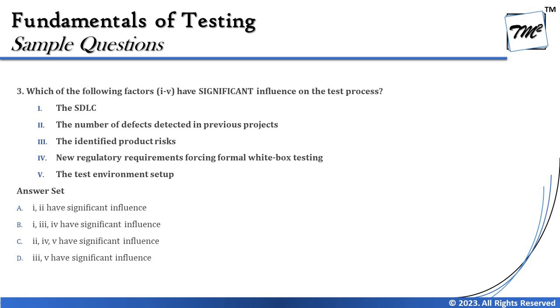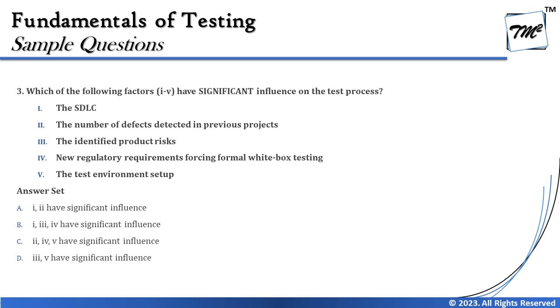Number Four — new regulatory requirements forcing formal white-box testing. This is another important factor; regulatory and contractual requirements, if not fulfilled, may prevent the product from going live, which is a big challenge for the organization. Number Five — the test environment setup. This is an activity conducted as part of business and product requirements but does not significantly drive the test process itself. So it does not have significant influence.